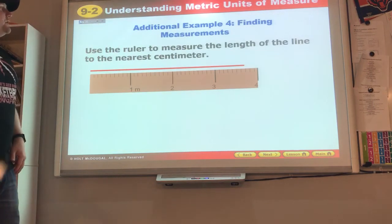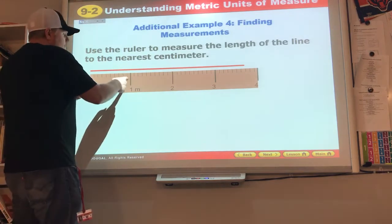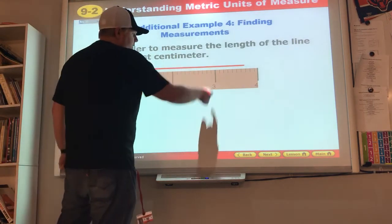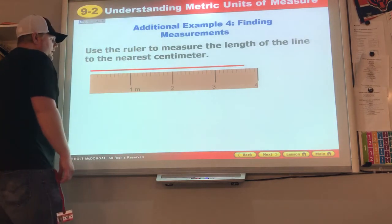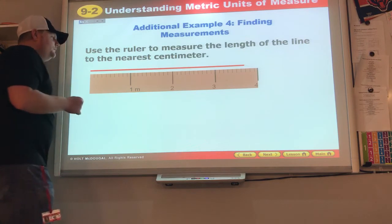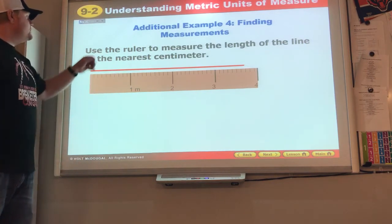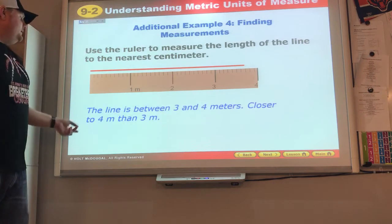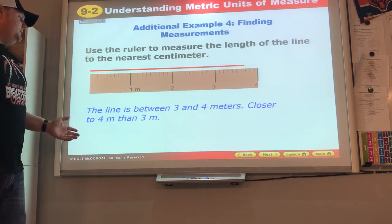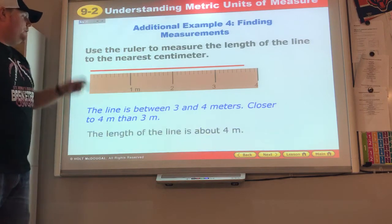Now use the ruler to measure the length of the line to the nearest centimeter. One meter, two meters, three meters. Each of these is about 10 centimeters. So we're going to see the line is between three and four meters. It's closer to four meters than three meters.